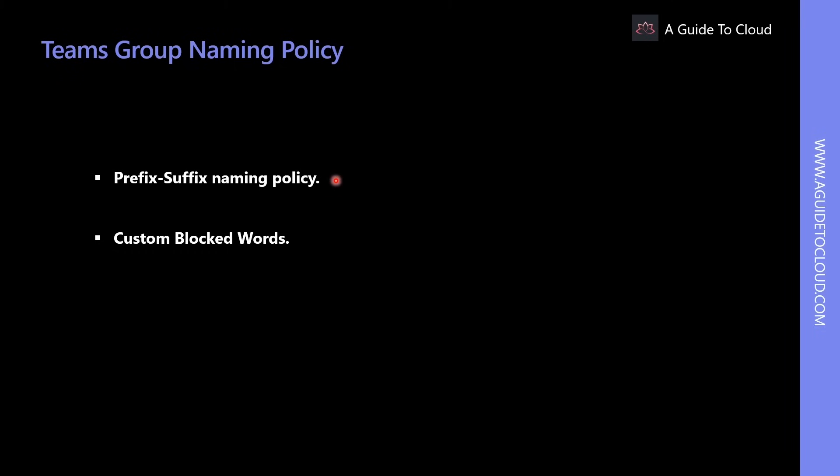In prefix-suffix naming policy, you can use prefixes or suffixes — either fixed strings like a department name, or user attributes substituted based on who is creating the group — to define the naming convention. In custom block words, you can upload a set of organization-specific blocked words — such as 'salary statement' or 'human resources' — that will be blocked in group names created by users.